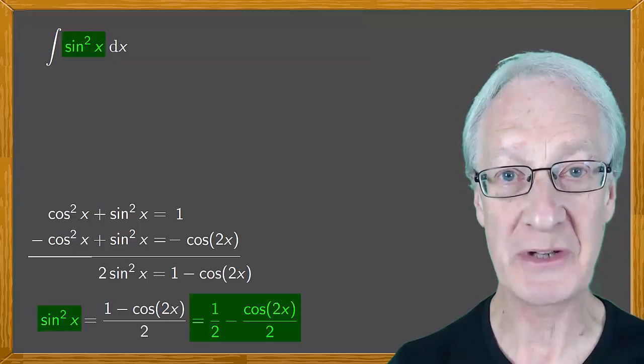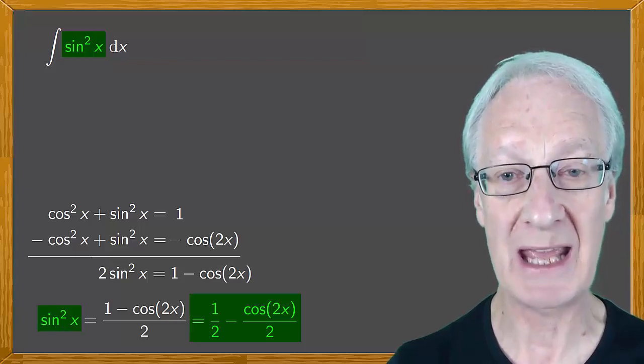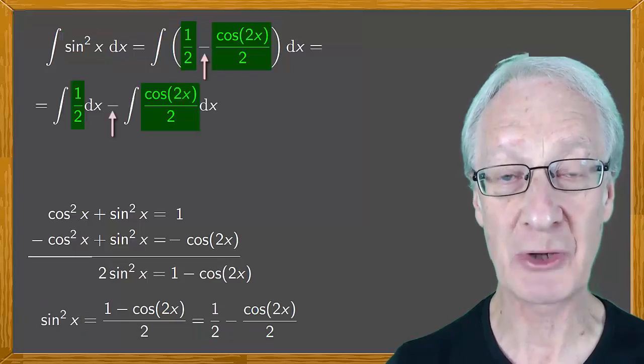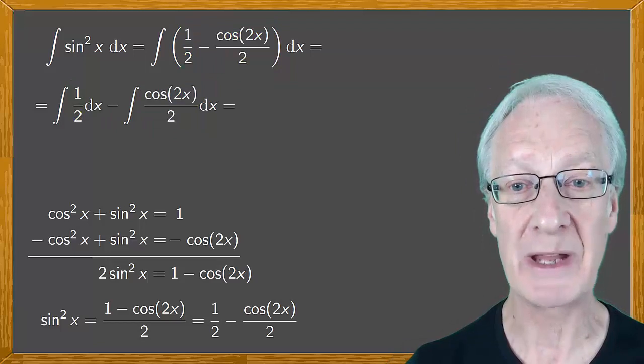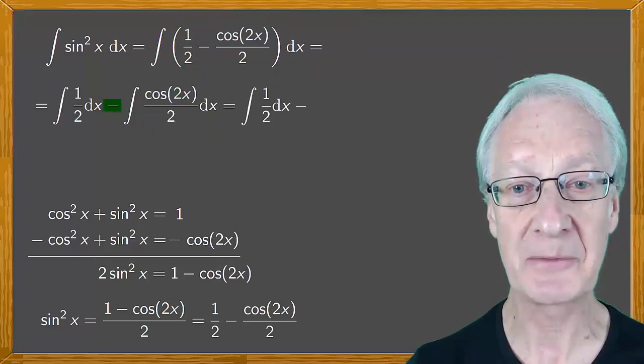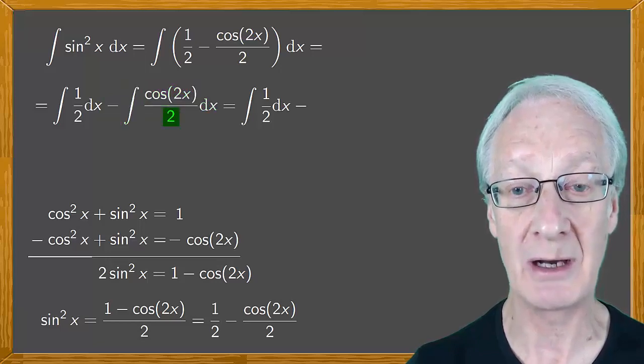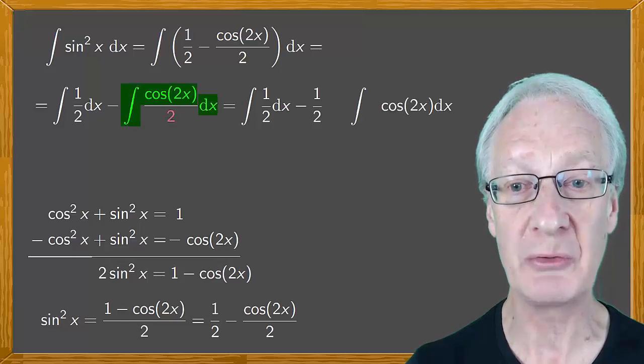Now we'll substitute this expression in the integral of sine squared x. The integral of a subtraction is the subtraction of the integrals. So, we have the integral of a half minus the second integral from which we can take out the half.